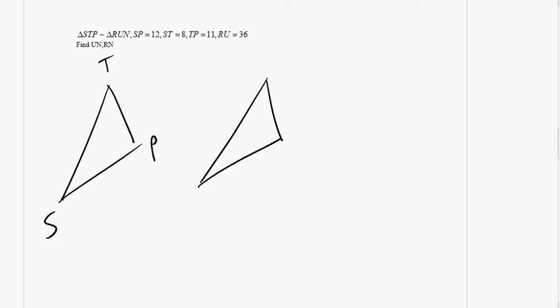In this problem, we're not given a picture. We're given two triangles that are similar. It probably makes sense to draw two triangles that are oriented in a similar way, just so you don't get mixed up between what sides correspond with what. Make sure you label them the same way.